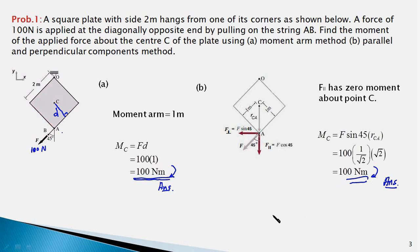That concludes the solution of the problem. Two important points to note: first, no matter which method you use, the end result is the same — the moment of the force about point C is 100 newton-meters clockwise in both parts. Second, this was a fairly simple problem where it was easy to determine the perpendicular distance in part A, but that won't be the case in most problems. Therefore, finding the moment using rectangular components should always be the preferred method.